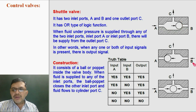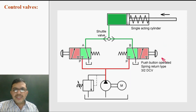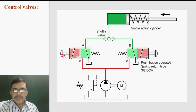In the same way, if working fluid is supplied to B, then it will close port A and allow fluid to flow to port C. This is a circuit having a shuttle valve. It has two pump push-button operated, spring-return type, normally closed type, 3×2 valves.